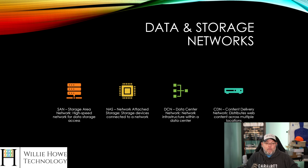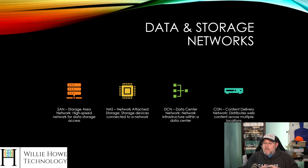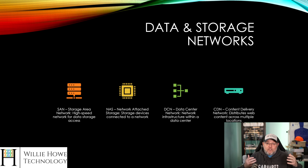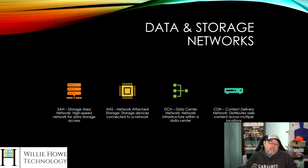We've got data and storage networks. Your SAN is your storage area network — a high-speed network for data storage access. The most commonly used protocols are iSCSI, Fiber Channel, or NFS. Then you've got a NAS, which is network-attached storage — storage devices connected to a network, but maybe not high-speed. You've got your data center network, which is the network infrastructure within an actual data center, like DigitalOcean, AWS, or Google. And then a content delivery network, which distributes web content. Cloudflare could also be considered a content delivery network.